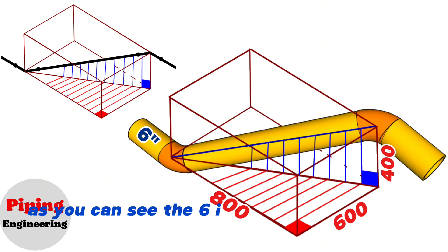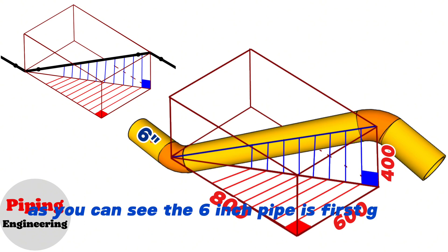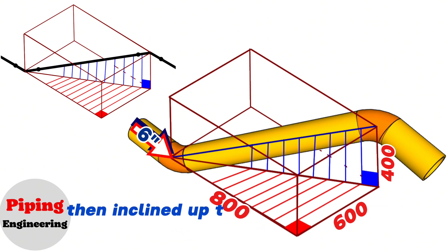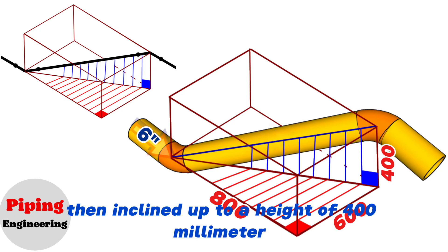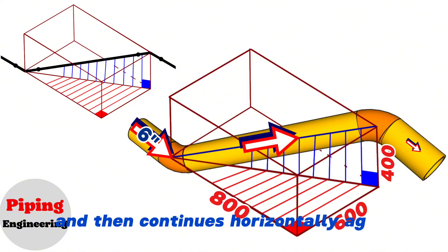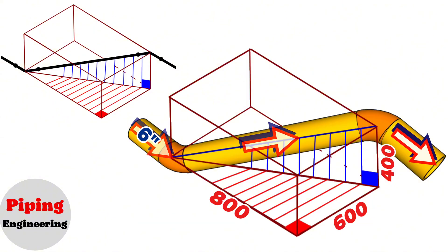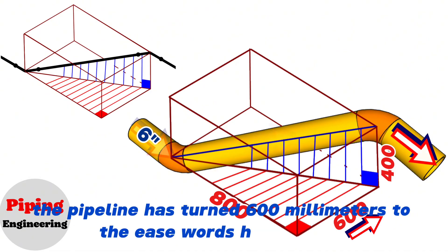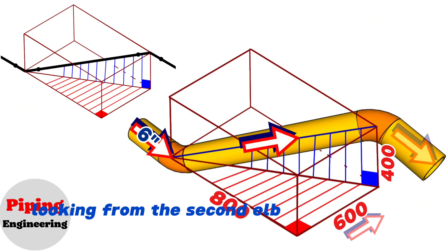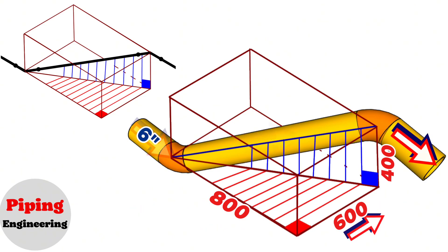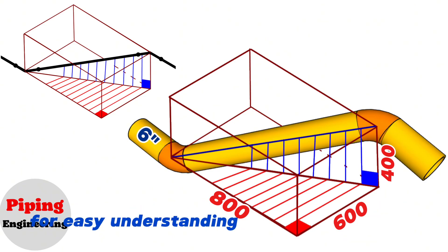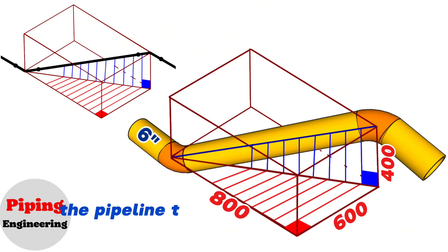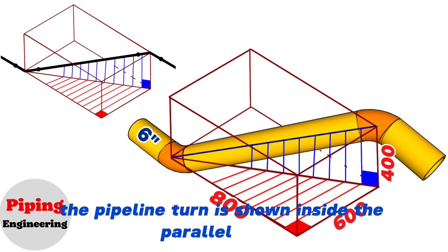As you can see, the 6-inch pipe is first going southwards, then inclined up to a height of 400mm, and then continues horizontally again. At the same time the pipeline has turned 600mm eastwards horizontally, looking from the second elbow to the first elbow. For easy understanding of the pipeline turn from the second elbow, the pipeline turn is shown inside a parallelogram.